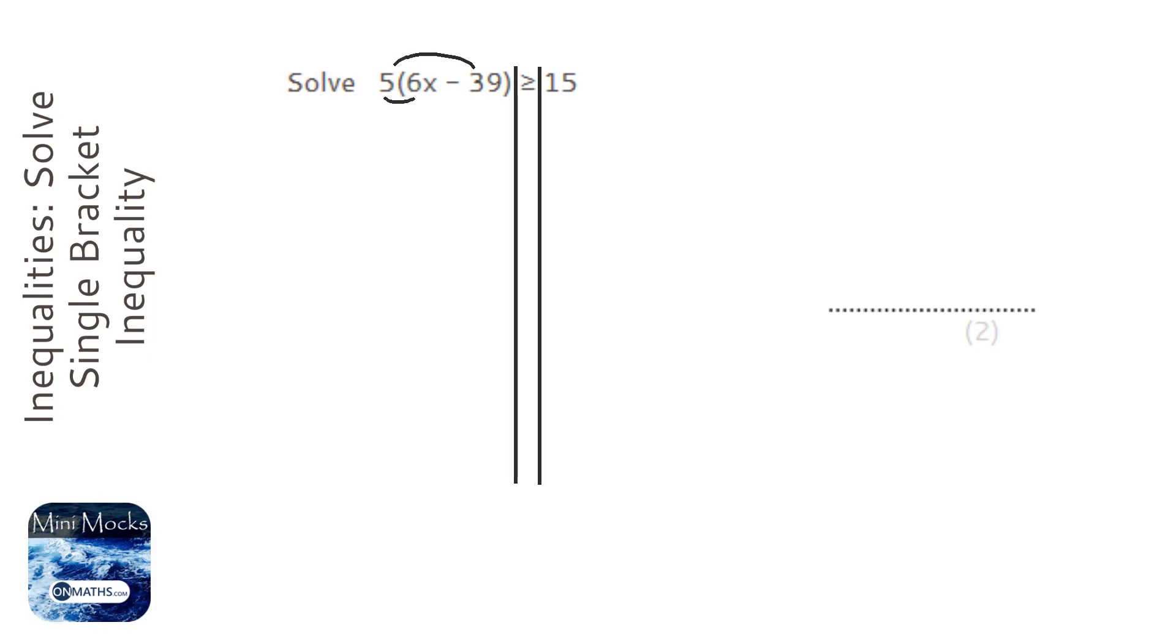So we're going to do smiles and rainbows or whatever you choose to do. So 5 times 6 is 30x and then 39 times 5 or we can do 10 times 5 and half it. So 39 times 5 is 195 and it's a minus and then 15.